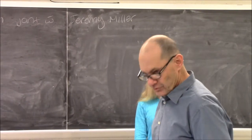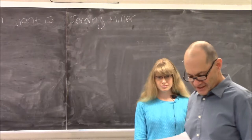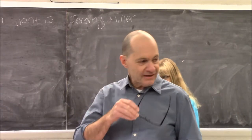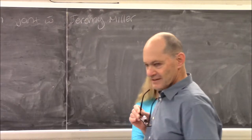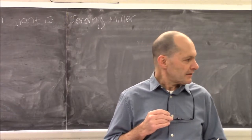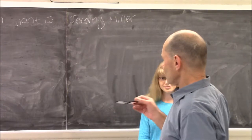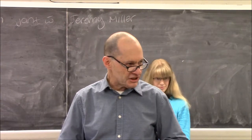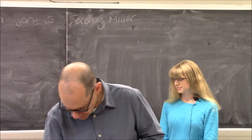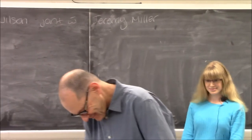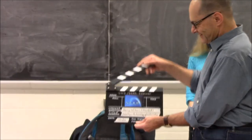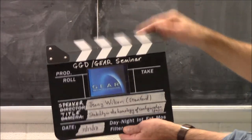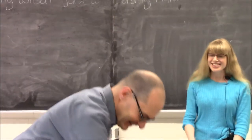She got a PhD in Chicago in 2014, and the dissertation topic was FI-modules and stability criteria for representations of the classical groups. Since then, Jenny moved to Stanford where she's a Ritt assistant professor, and her work on representation stability went in several directions, one of which she's going to tell us about today. Thank you for having me — it's great to be here.